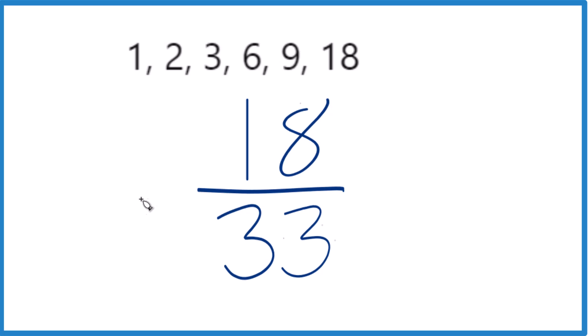For 33, we have 1 times 33 and 3 times 11. So for 18 over 33, we want that common factor. Looks like 1, that's a common factor, and then 3. And 3 is the greatest common factor.